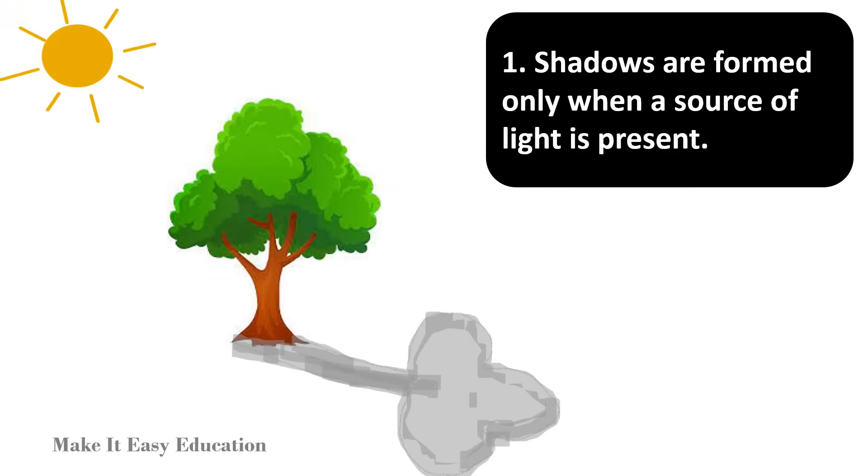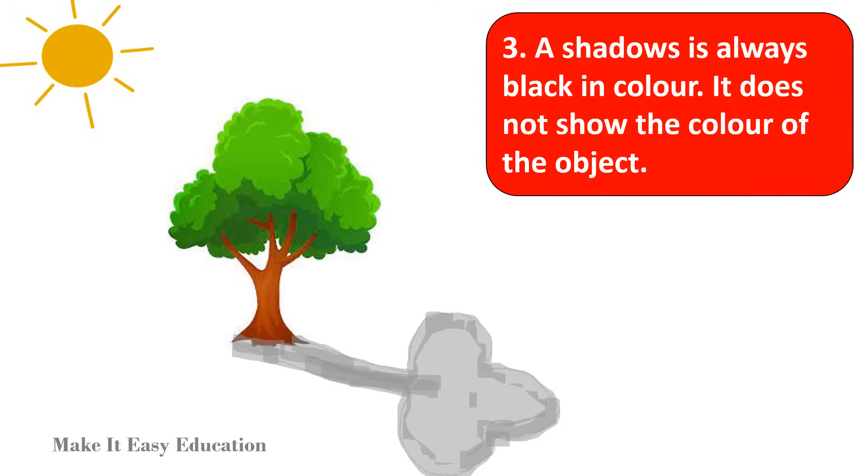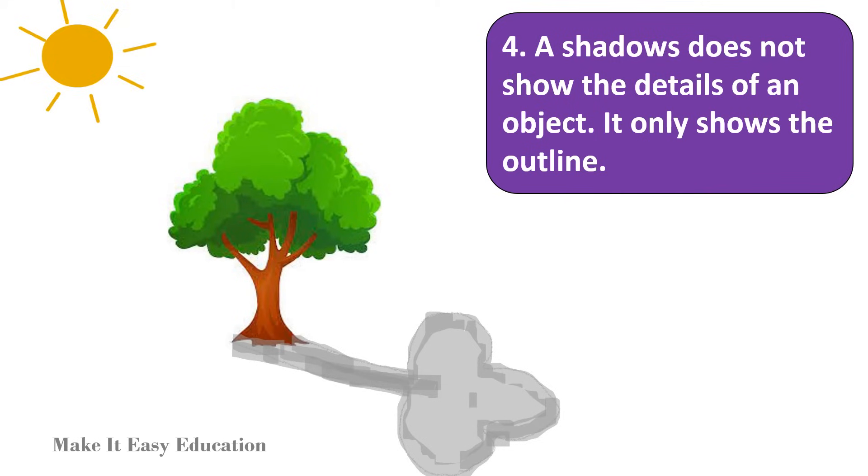Characteristics of shadows. Shadows are formed only when a source of light is present. Shadows are always formed on the opposite side of the source of light. A shadow is always black in color. It does not show the color of the object. A shadow does not show the details of an object. It only shows the outline.